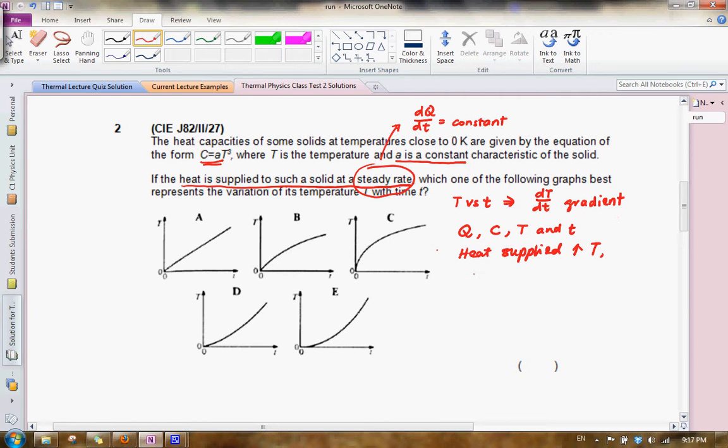Therefore, we also know that in general, the heat supplied Q can be given by the heat capacity times the change in temperature. So if you supply a small amount of heat, it will cause a small change in the temperature. We can further write that down. So since we want to actually look at the gradient dT dt, maybe we can differentiate and consider a very small time interval.